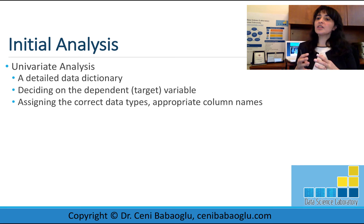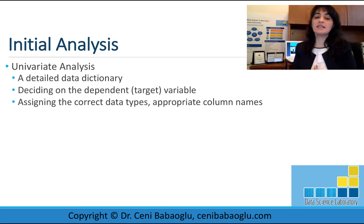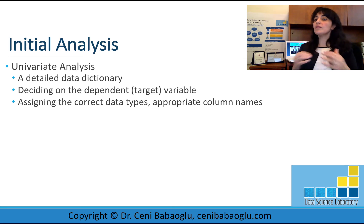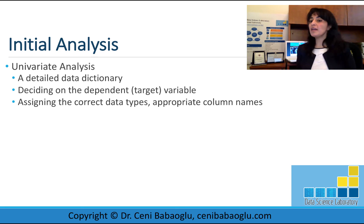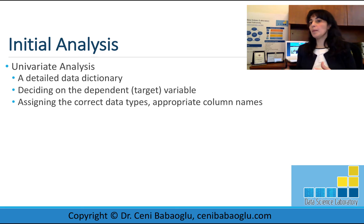The remaining variables will be input variables, and the target variable will be our output variable. Assigning the correct data types and appropriate column names is the next activity. All variables should be assigned the correct data type — numeric, categorical, etc. For numeric attributes, we check the five-number summary: minimum, mean, maximum, and first and third quartile.